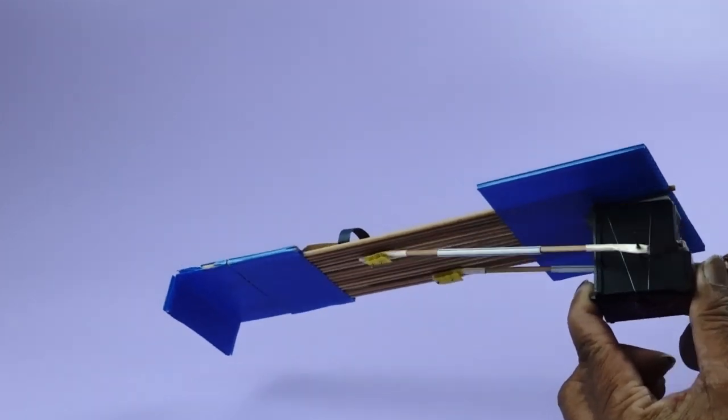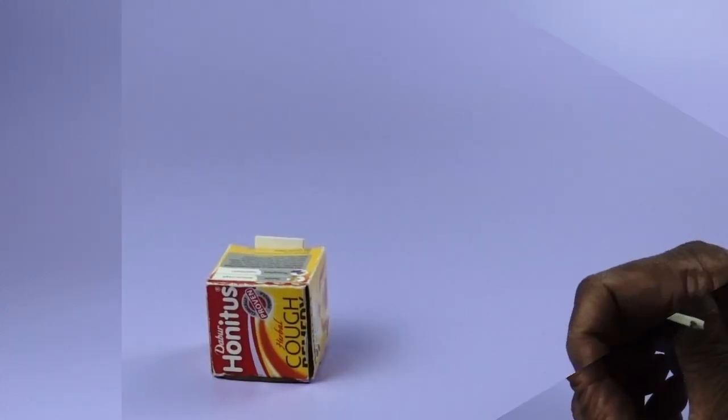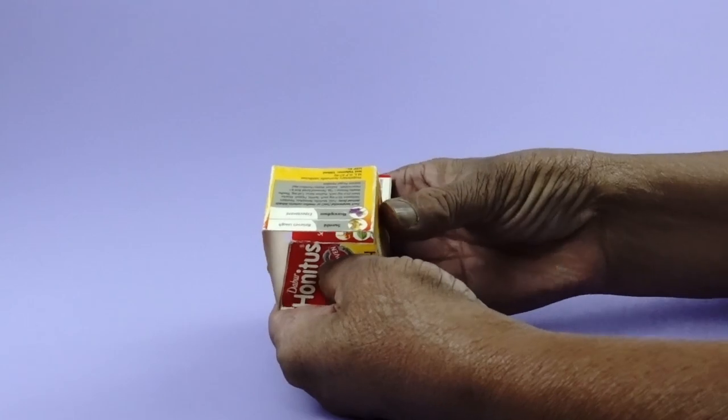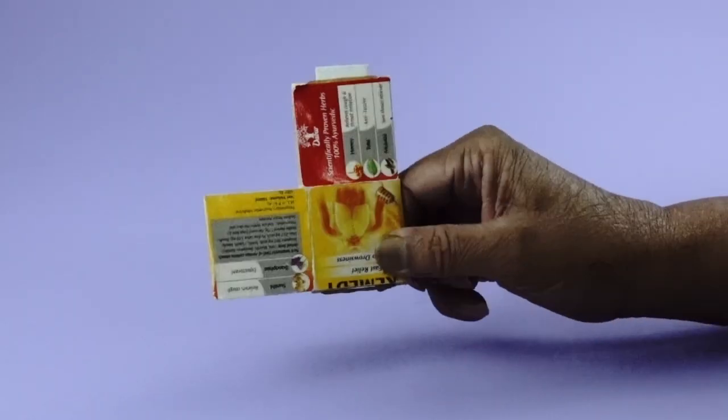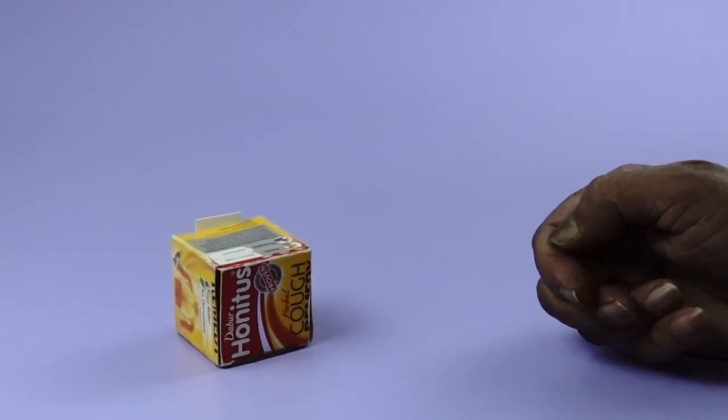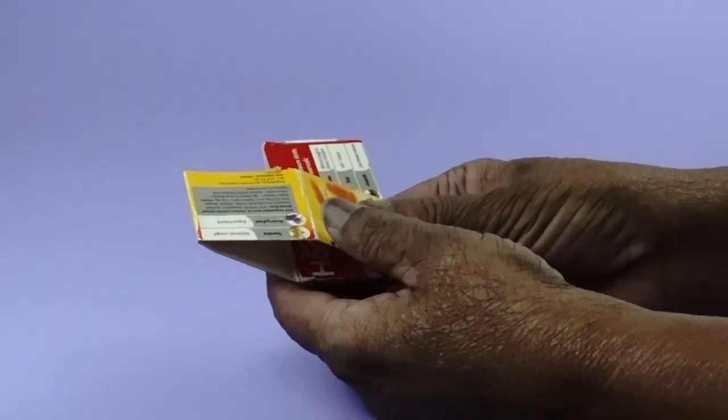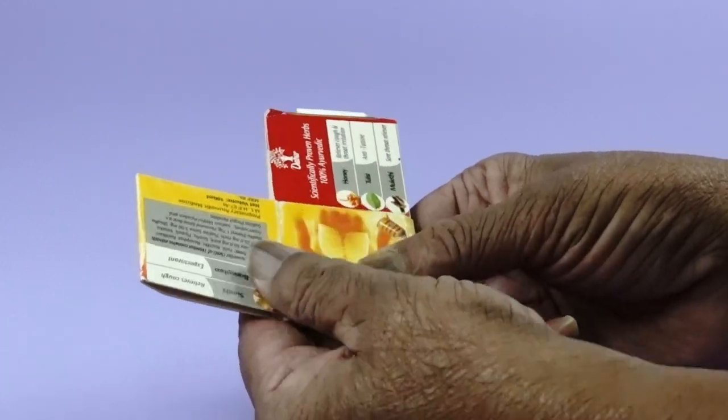Now, here is a box. And this is cut in such a way that it shows rigidity. Just press and leave it immediately. Can you guess the science behind it? Can you relate this toy with conversion of energies? Think on that.